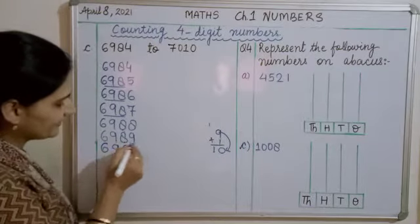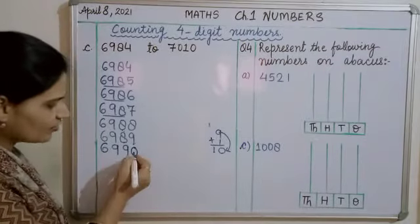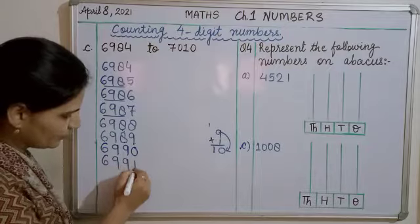So six thousand nine hundred eighty nine ke baad ho ga six thousand nine hundred ninety. Ab next number kya ho ga? Zero me one add kardo. Tho six thousand nine hundred ninety one.